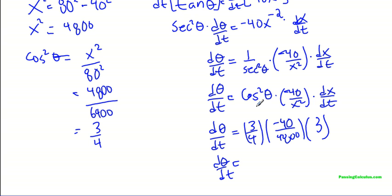So three times negative 40 times 3 divided by 4 divided by 4,800. And that ends up being negative 3 over 160 radians per second. So there's your answer.